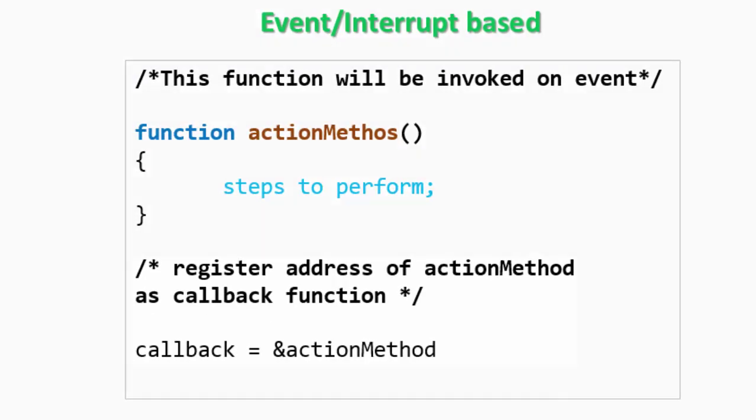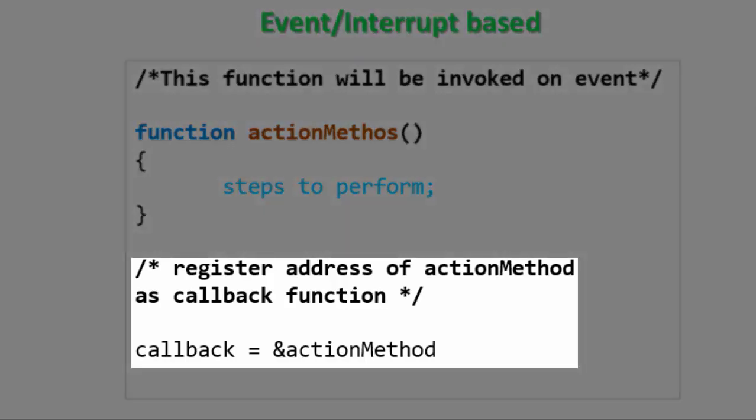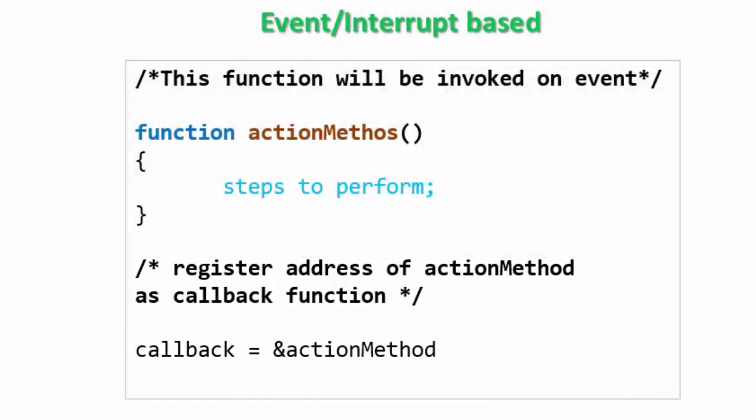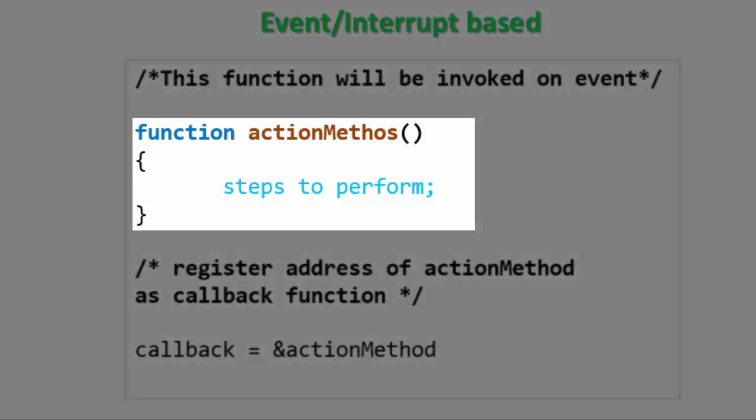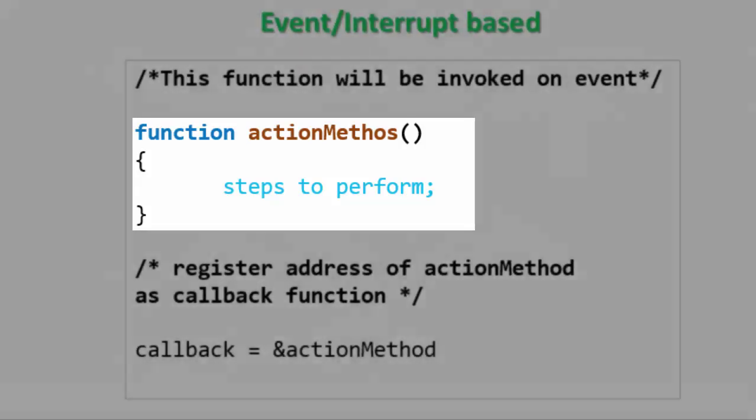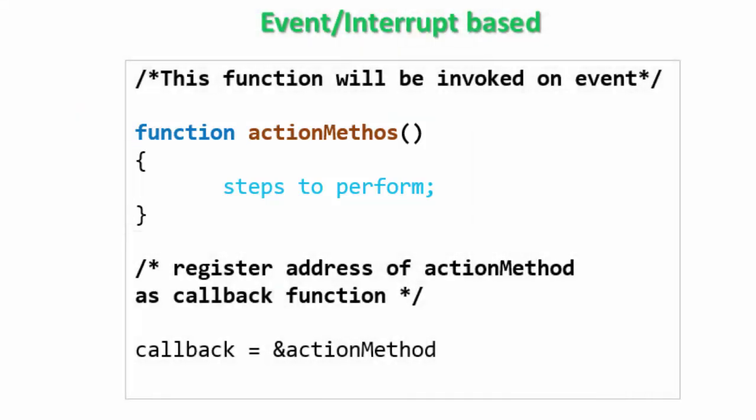Second option is, register a callback function that will wait for such interrupts. The main program can then continue with the execution without explicitly waiting. The callback function will have a set of statements to be executed in response to the interrupt. On occurrence of interrupt, all the registered callback functions are invoked.